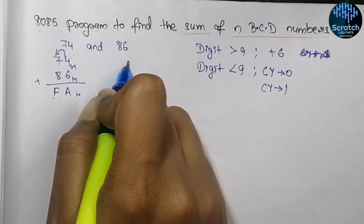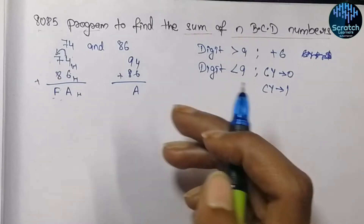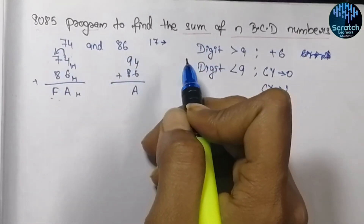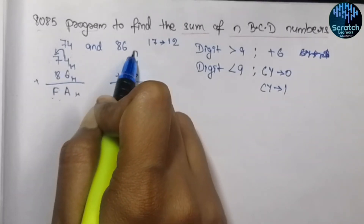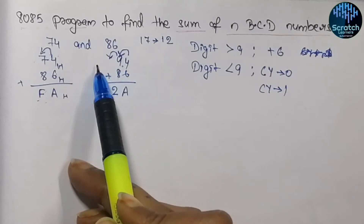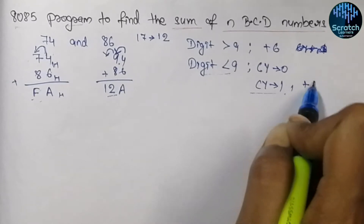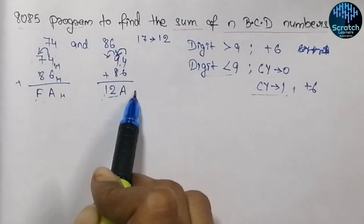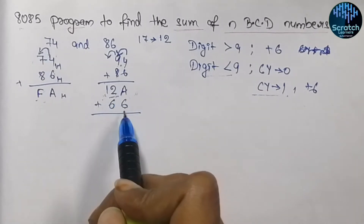Let's try another example: 94 and 86 hex. If we add them: 6 plus 4 equals A, and 9 plus 8 in normal decimal equals 17. If we write 17 in hexadecimal format, 17 equals 12 hex, so we write 12 here. Now a carry is generated from the lower nibble to the upper nibble — we are performing 8 plus 9 — but the digit here is less than 9, so this satisfies the carry condition. In that case, we add 6 to that digit as well.